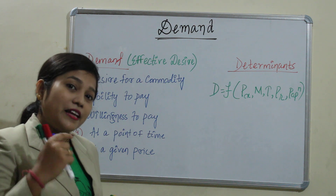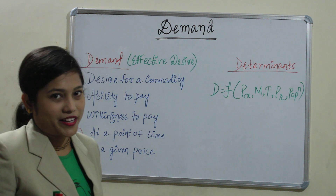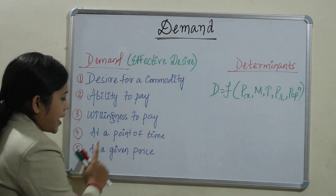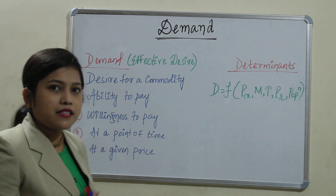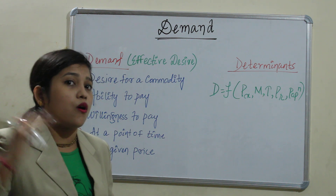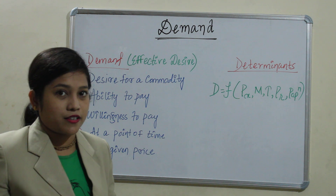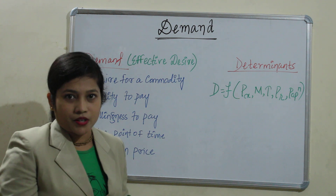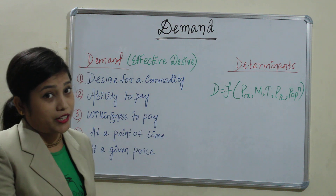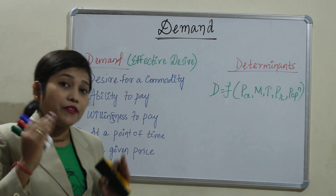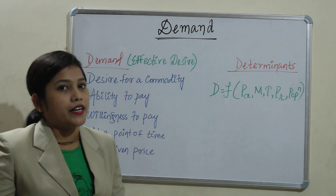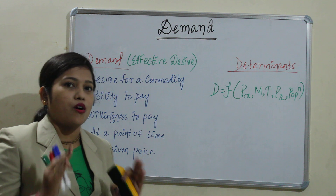We have money and we are willing to pay for that commodity. Next, at a point of time and at a given price — within this week or this month, at a price already fixed by the market. We will not bargain. So we must have the desire, ability to pay, and willingness to pay, at the current time and at the current market price. That is what demand is.